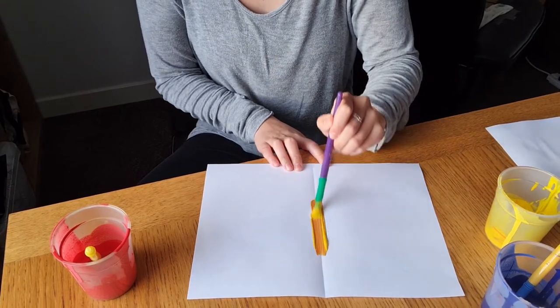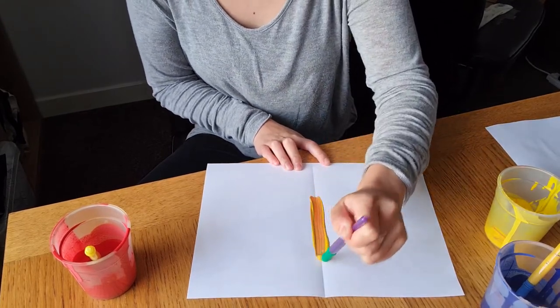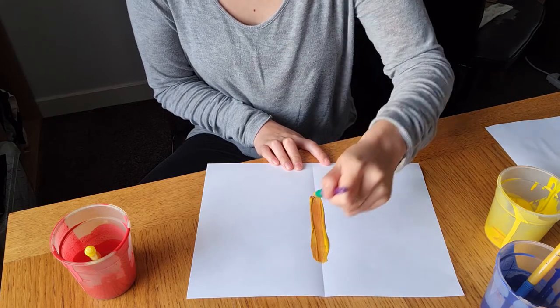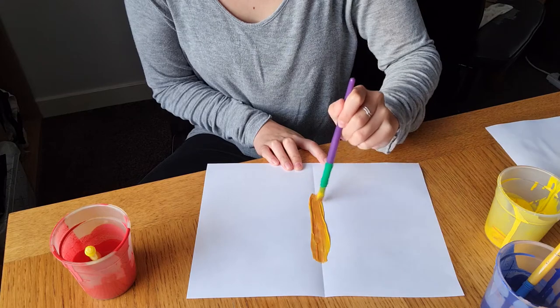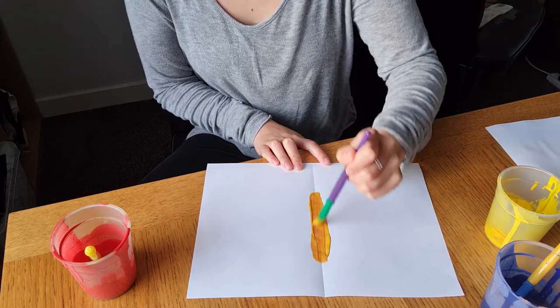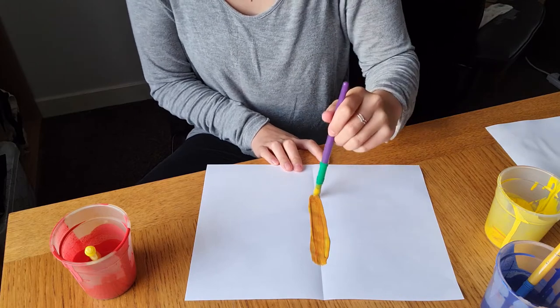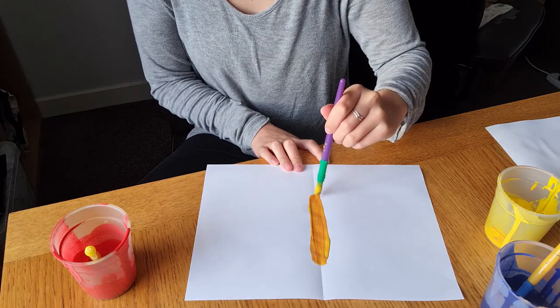As you can see, Mandy's not cleaned the brush so it's coming out orange instead of yellow. So it would be a good idea if you had maybe a little pot of water to use in the middle of cleaning your brushes so you don't mix all the paint up.